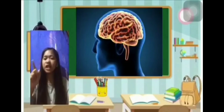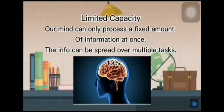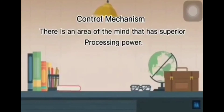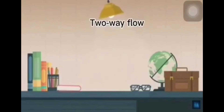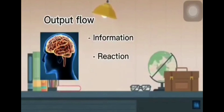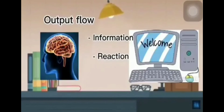Now let's move on to the principles of the cognitive approach. There are three assumptions. The first is limited capacity — our minds can only process a fixed amount of information at once, and the information can be spread over multiple tasks. The second is control mechanism — there is an area of the mind that has superior processing power and can control activity in other areas of the brain. The third is two-way flow — the mind takes information from the environment as input, and once processed, produces a behavioral reaction as output.